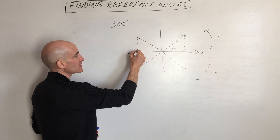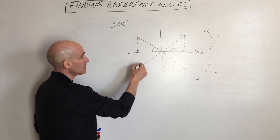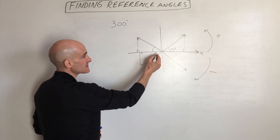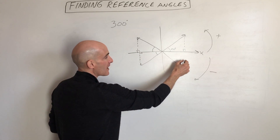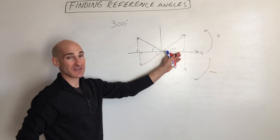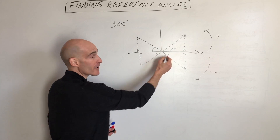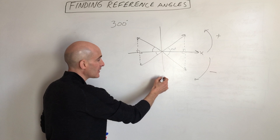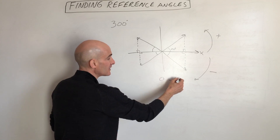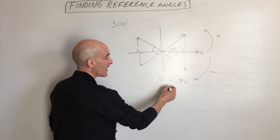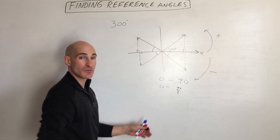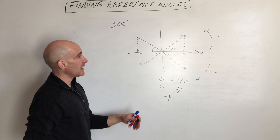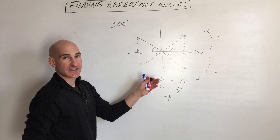So for each quadrant: drop a perpendicular to the x-axis, and that's your reference angle. The reference angle is always going to be an angle between 0 and 90 degrees, or 0 and pi over 2 in radians. It's always going to be positive.